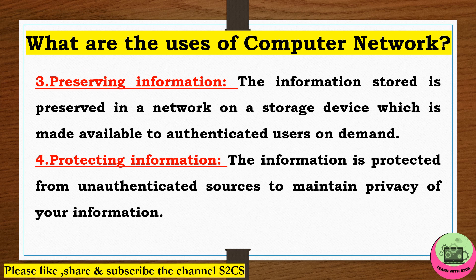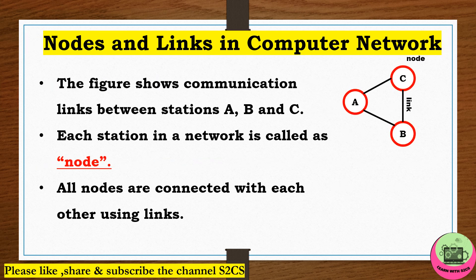The third use is preserving information. A particular piece of information is stored at a specific place on a storage device, and on demand, authenticated users can access that information. The fourth use is protecting information. Privacy of information is very important, and through networks the information is protected from unauthenticated sources.